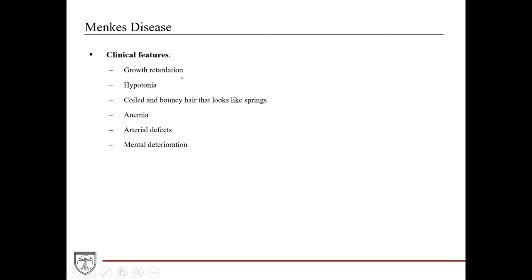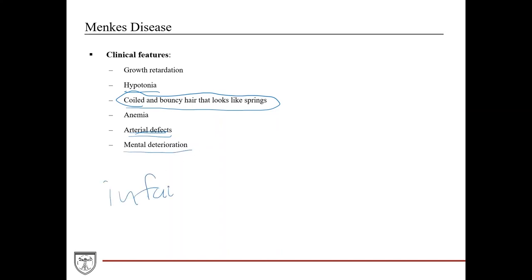The clinical features of Menke's disease include growth retardation, hypotonia, coiled and bouncy hair that looks like springs (a very characteristic finding), anemia, arterial defects (which makes sense given collagen's role in arterial walls), and mental deterioration. This is a disease that begins in infancy, starting right at birth. Unfortunately, there is no cure, and the average age of death is about three years, with patients typically not surviving much longer than that.